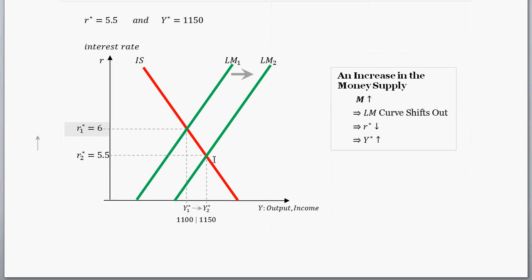So that shifts out, and we have a new equilibrium interest rate, 5.5, and a new equilibrium output, 1150, which we just found.